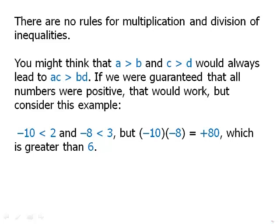Negative 10 is clearly less than positive 2, and negative 8 is clearly less than positive 3. But if we multiply, we get negative 8 times negative 10, and negative times negative gives us positive 80, which is greater than 6, 2 times 3, which is 6. So this is an example where multiplying the two quote unquote smaller numbers, the negative numbers, gives a very positive, a very large product. And so that's why there are no rules whatsoever for multiplication and division of inequalities.